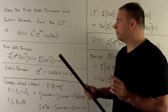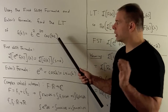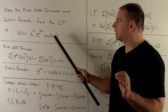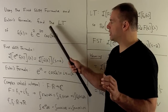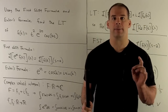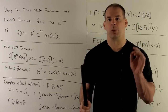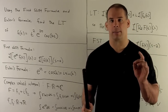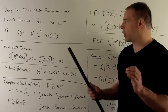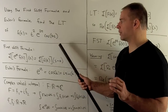For our f(t), e^(2t) is definitely going to be handled by the first shift formula. The catch is that when we bring in complex numbers, we can also use it to take care of the cosine 3t.